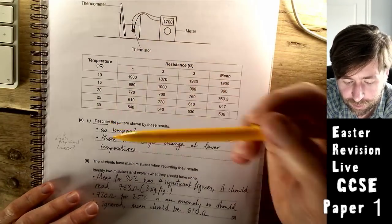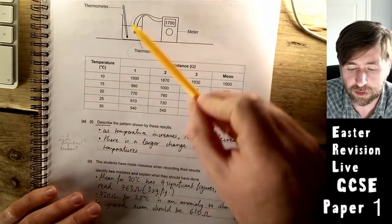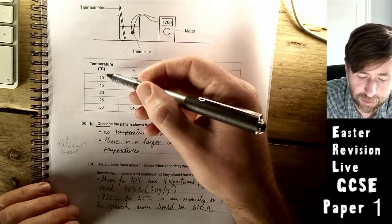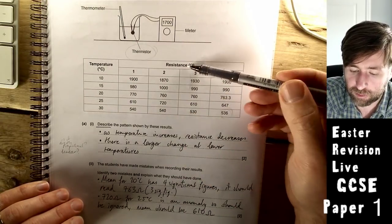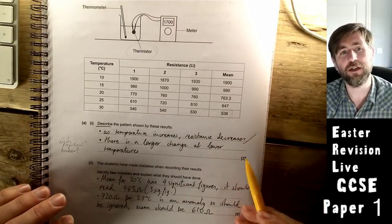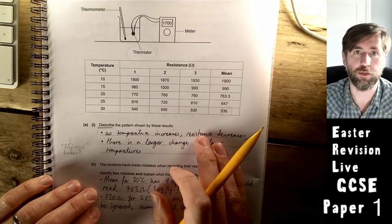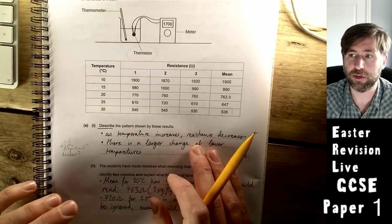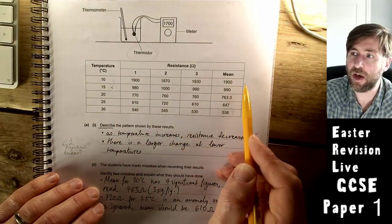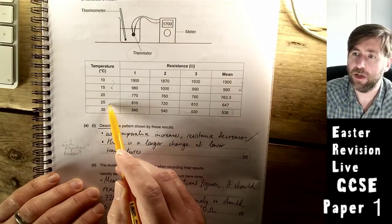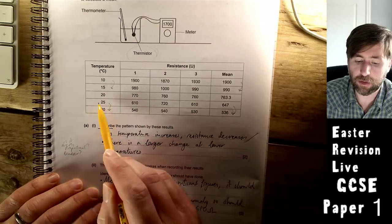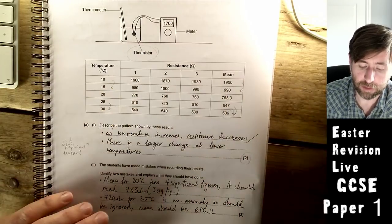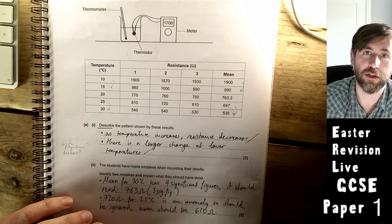For the thermometer, describe the pattern shown by these results. This is a practical to do with a thermistor. You could do all this without anything just by describing the pattern. As temperature increases, the resistance decreases. Got a mark there. What's the second mark going to be for? Is it directly proportional, linear, inversely proportional? What exactly is the relationship? From 10 to 15, it decreases by 1,000, so 5 degrees Celsius and 1,000. From 25 to 30, it only decreases by about 100. So it's not linear. You get the mark for saying it's not linear. There's a larger change in resistance at the lower temperatures. You can imagine it being a graph with a bigger gradient at first and a smaller gradient later.